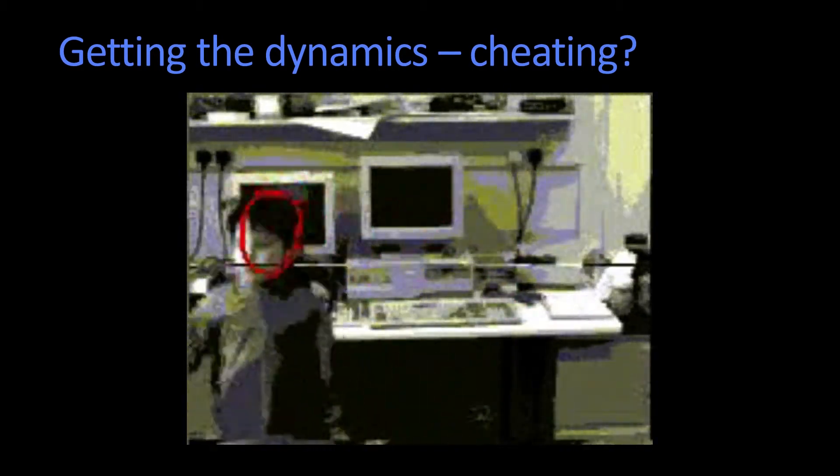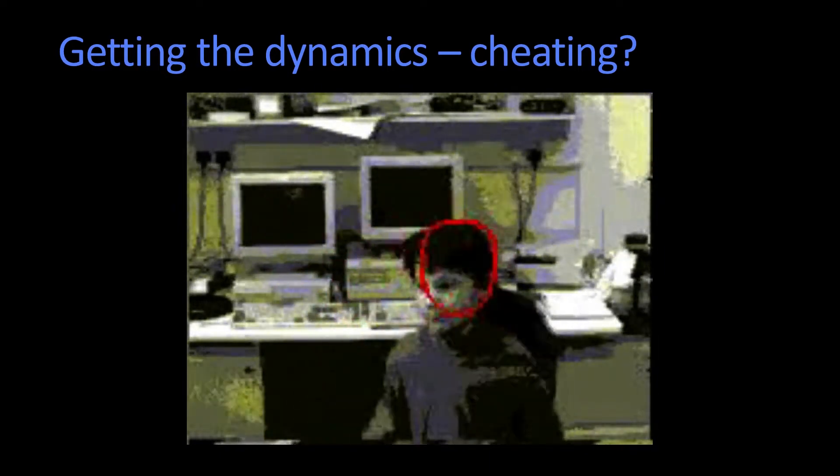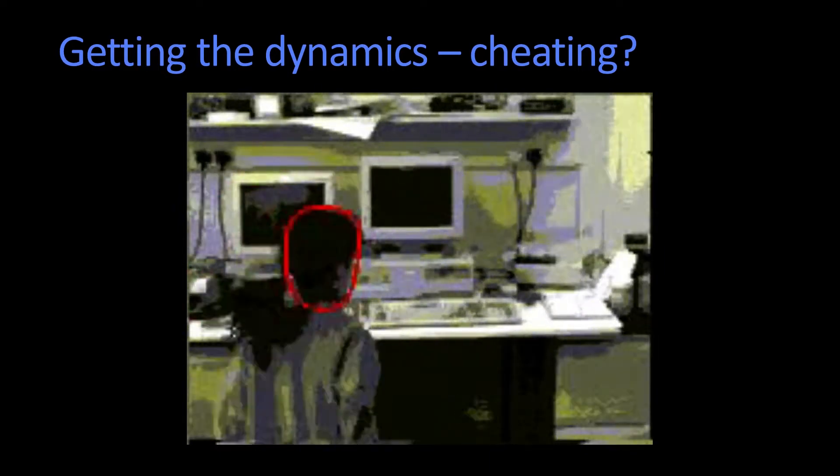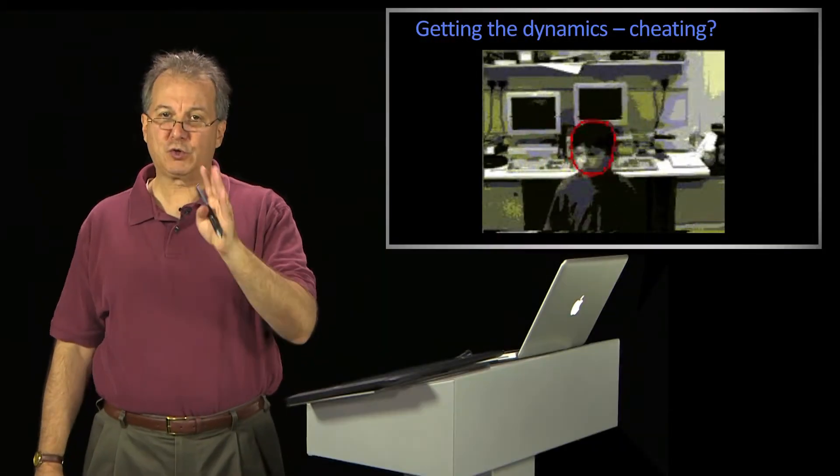The easiest thing to do is to cheat. So the reason we're using dynamics here is that the girl is jumping up and down in front of a cluttered background. So to keep track of where her head is, is kind of a difficult tracking problem. That's why we're doing all this work to begin with. That's why we're using particles.